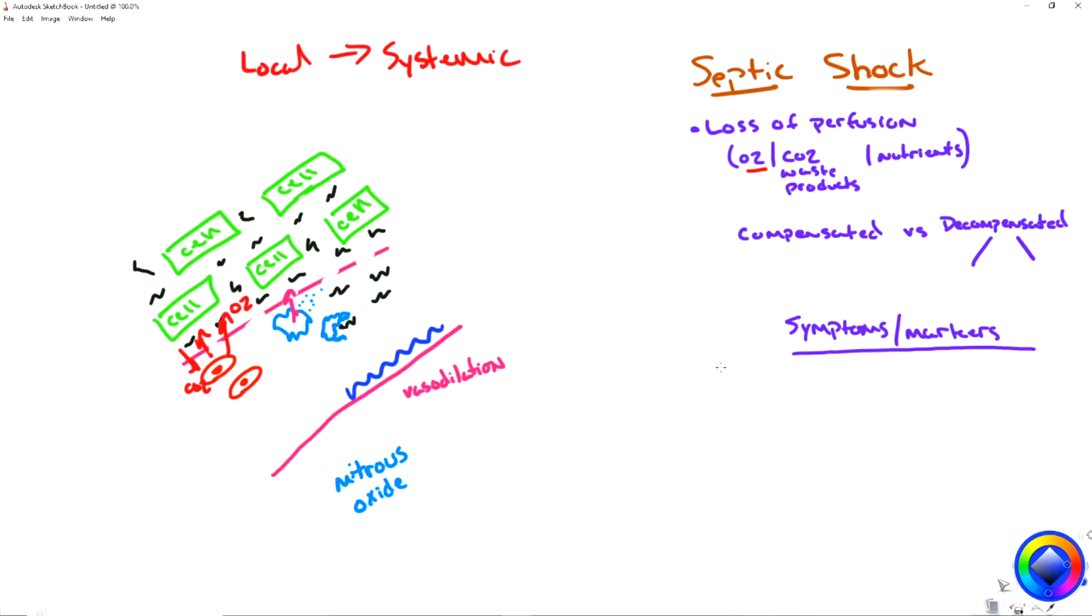The first is we're going to start to see blood pool in these vasodilated or these dilated vessels, right? Arteries, veins, doesn't matter. Blood's going to start to pool in those vessels. Blood, when it pools, doesn't go back to the heart. So our preload goes down. So preload goes down, which then in turn, cardiac output also goes down causing hypotension. And this is going to be your first marker.